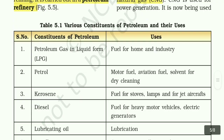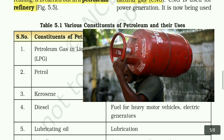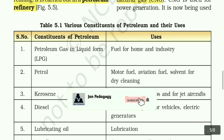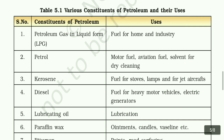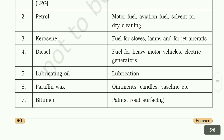The various constituents of petroleum and their uses: petroleum gas in liquid form is used as LPG — fuel for home and industry. Petrol is used as motor fuel, aviation fuel, and solvent for dry cleaning. Kerosene is used as fuel for stoves, lamps, and jet aircraft. Diesel is used for heavy motor vehicles and electric generators. Lubricating oil is used for lubrication. Paraffin wax is used for ointments, candles, vaseline, etc. Bitumen is used for paints and road surfacing.